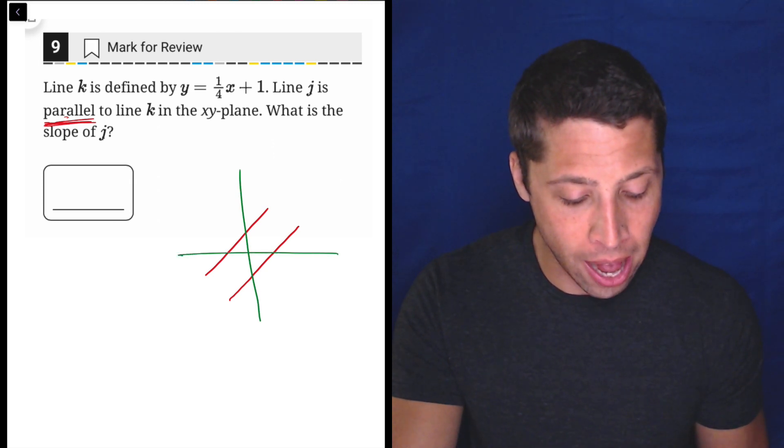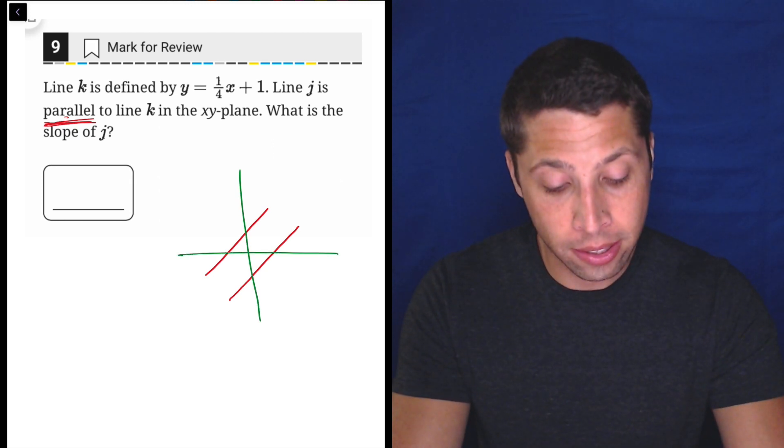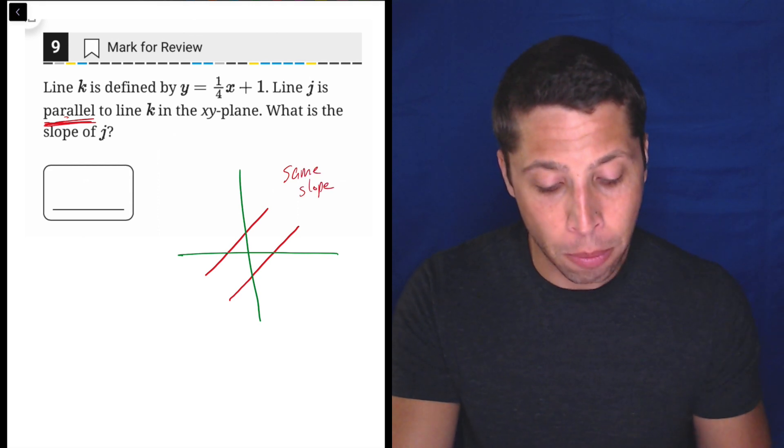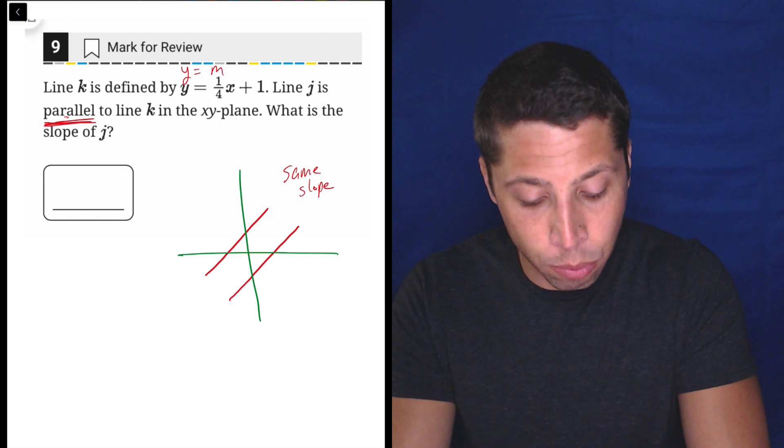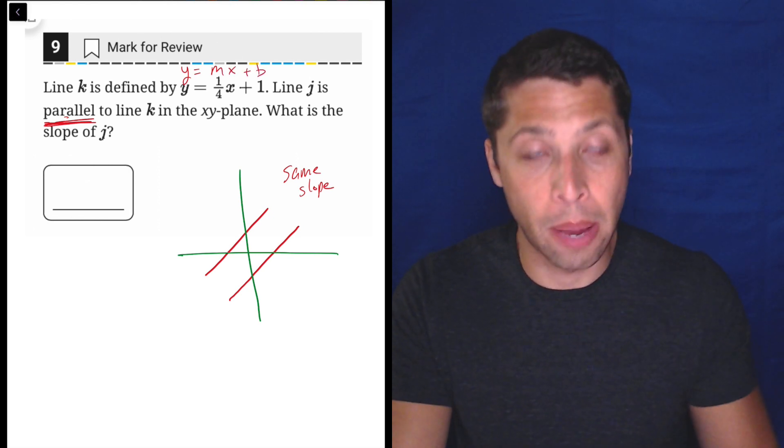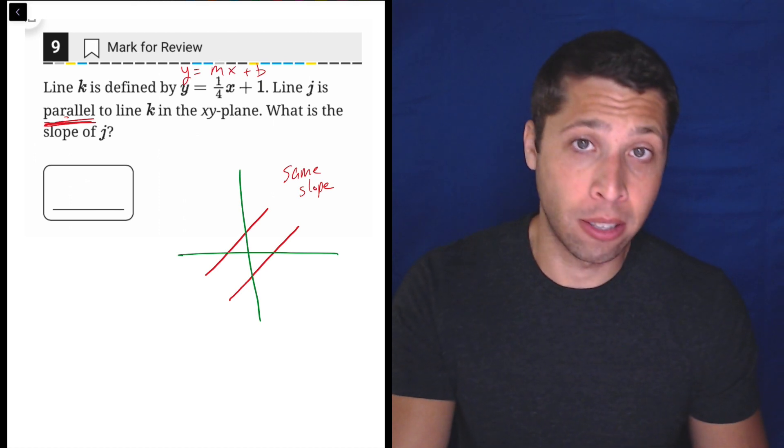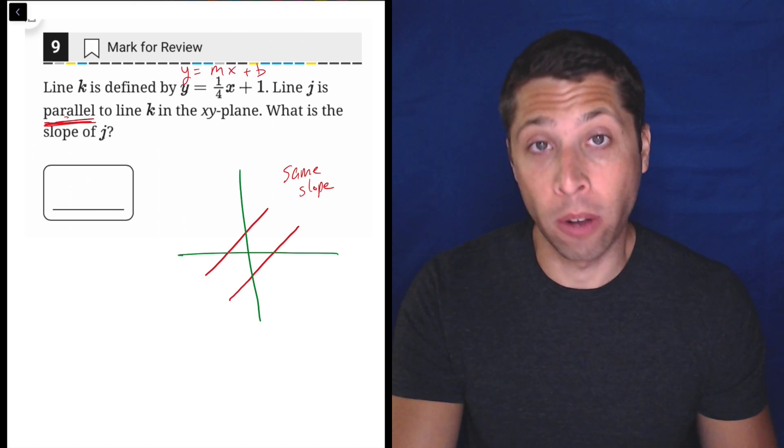But for a graph, that just means that the two lines on the graph are going to have the same slope. Okay, same slope. Well now let's just compare the line that they gave us, which is in the format y equals mx plus b. What is the slope? Well the m represents the slope of a line, so the slope is 1/4.